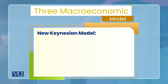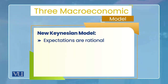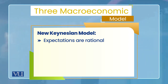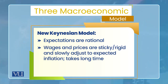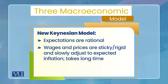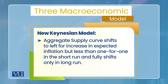The third model is the new Keynesian model. In this model, expectations are again rational — this is a common feature with the new classical model. But the difference from the new classical model is that wages and prices are sticky. So whenever there is a shock that hits the economy, wages and prices will change in the long run, but in the short run they are not adjustable.